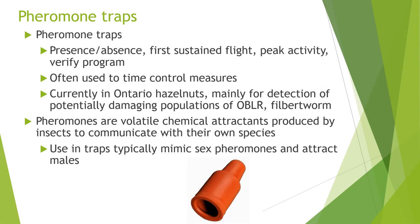Other than the bud mite sticky trap, there are also pheromone traps for moths. Pheromone traps are really useful for detecting presence or absence of a particular insect in your orchard. If you know the insect is problematic, they help you determine peak activity and when to time control measures. Pheromones are volatile chemical attractants that insects produce to communicate with other members of their species — the ones in commercial traps are typically sex pheromones, mimicking the sex pheromones produced by females to attract males. They come in a little rubber septum that you stick in a sticky trap.